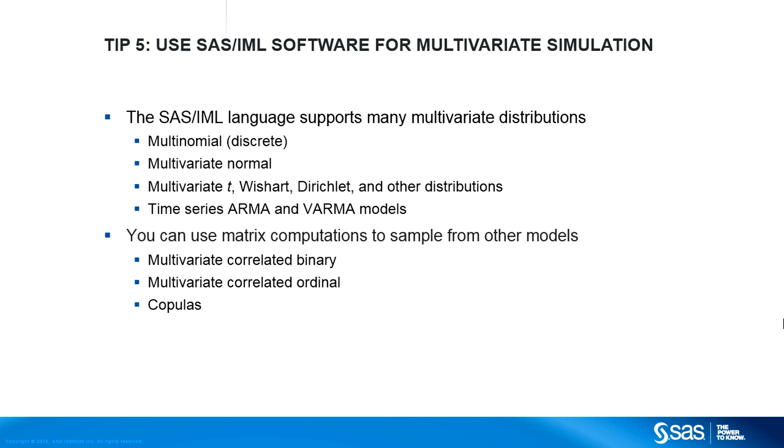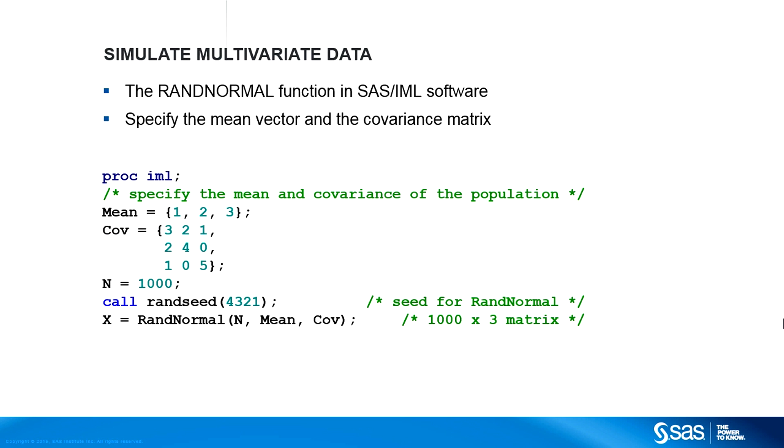Tip number five: use SAS IML software for multivariate simulation. The data step is a powerful tool for simulating data from univariate or uncorrelated multivariate distributions. However, the SAS IML language, which is a matrix language, is the tool of choice for simulating data from correlated multivariate distributions. SAS IML contains many built-in functions for simulating data from standard multivariate distributions and supports the matrix computations that are required to create algorithms that sample from less common multivariate distributions.